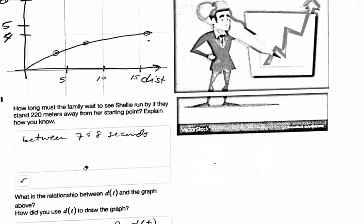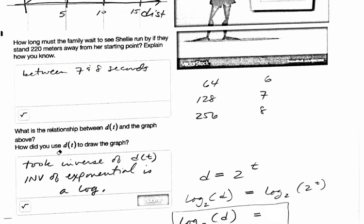And so how long if they stood at 220 meters? And so I just need to continue that table. So 64 was at 6, we found that in the previous problem. 128 was at 7, and 256 meters was at 8 seconds. So how long to get to 220? It's going to be somewhere between 7 and 8, most likely going to be closer to 8. It's a little different because it's not a linear scale.